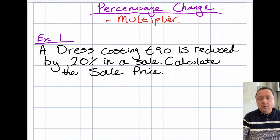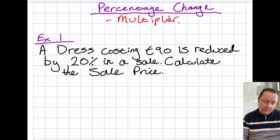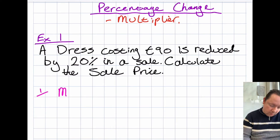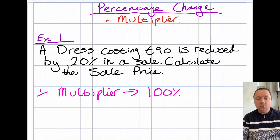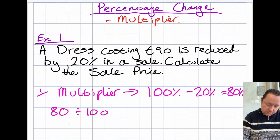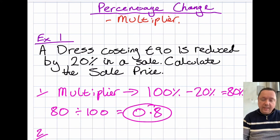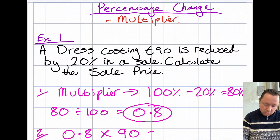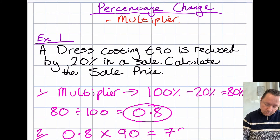Let's look at some wordy problems. Example 1: A dress costing £90 is reduced by 20% in a sale. Calculate the sale price. Step 1 — find the multiplier. Starting with 100%, the sale is going down, so we take away 20%, leaving 80%. Change that to a decimal: 80 divided by 100 gives a multiplier of 0.8. Step 2: 0.8 times £90 — that's 9 times 8 equals 72 — so the answer is £72.